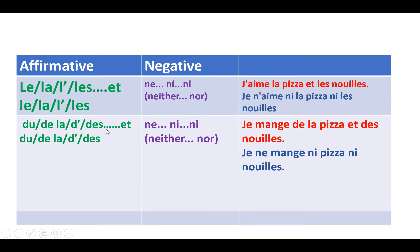However, be careful with partitive articles (du, de la, de l', des), which indicate quantity. In negation with 'ni...ni,' you remove the partitive article entirely. For example, 'je mange de la pizza et des nouilles' — I eat pizza and noodles. Negation: 'je ne mange ni pizza ni nouilles.' The partitive articles 'de la' and 'des' are removed in negation because the quantity becomes zero.